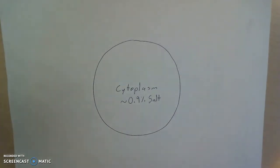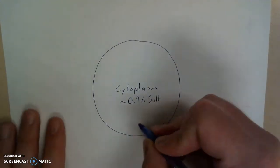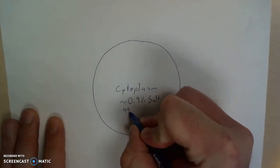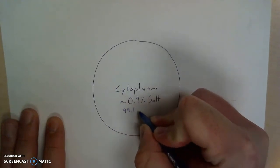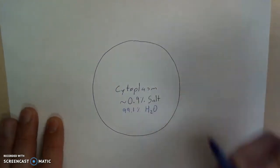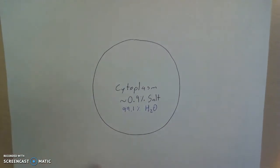And so if we think about that, if the cytoplasm is about 0.9% salt, we could ask, well what's the rest? And of course, again, the cytoplasm is a very complex fluid, but we could generalize and say the cytoplasm must be 99.1% water. So we can make this generalization about cells and their contents. This will help us simplify our thought process related to osmosis.